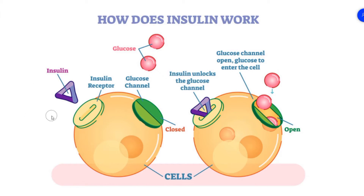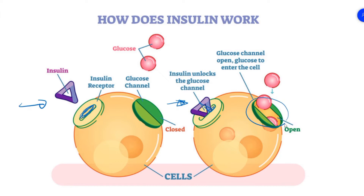That help only comes from insulin. Looking at this illustration, insulin works as a key to a lock on the cell. Only insulin fits into this lock, which is called the insulin receptor. Once insulin fits into the receptor, the glucose channel will open, and as a result, glucose or blood sugar can enter those cells. That is primarily what insulin does in our body.